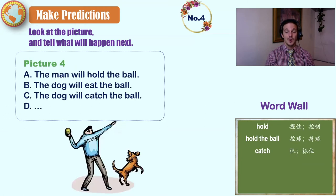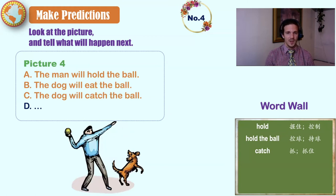Four, hold, hold the ball, catch. Let's look at the picture. The man will hold the ball. The dog will eat the ball. The dog will catch the ball. How about you say one for letter D?